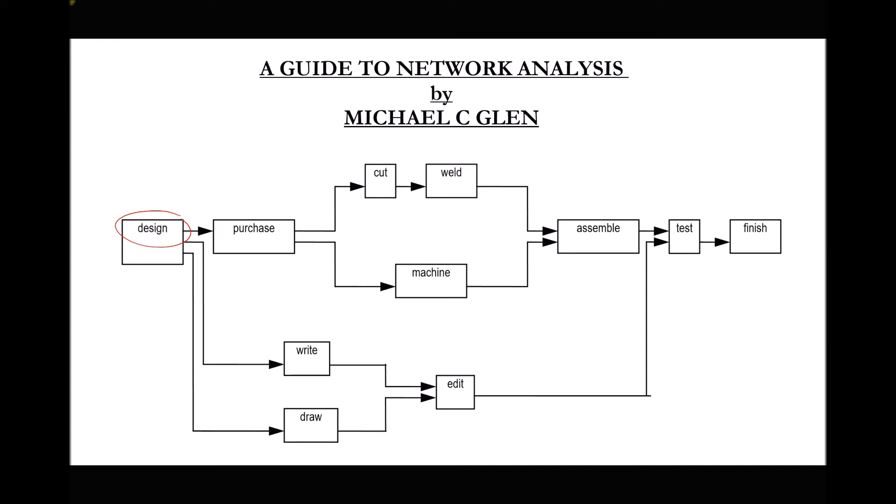Once those two components are produced, they need to be assembled and tested before we can finish manufacturing. Looking at the top line, two activities can run concurrently: the cutting and welding of one component and the machining of another. These two processes can be carried out in different areas of a factory by different people — one doesn't need to be completed before the other starts. However, we do need to purchase the materials before either fabrication or machining can begin. Some tasks are dependent on others, while other tasks can run concurrently.